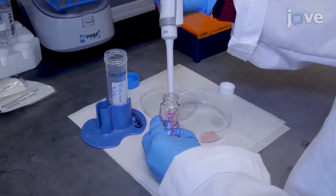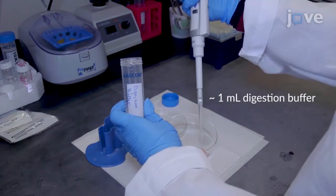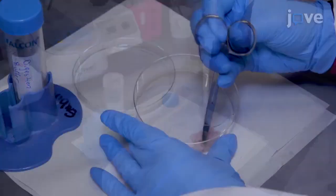Add calcium chloride to the digestion buffer to a final concentration of 10 millimolar. Then add a small volume of the buffer to the tissue and thoroughly mince it.